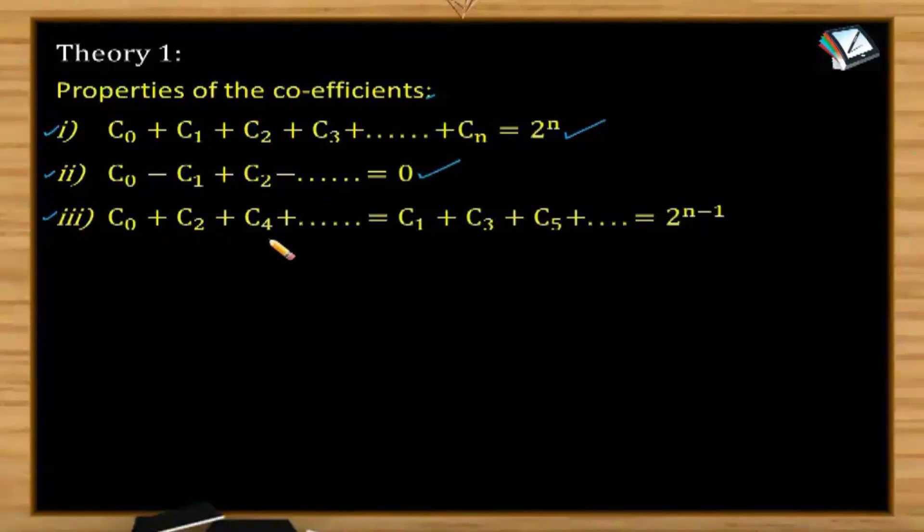And property number 3: C0 plus C2 plus C4 plus and so on equals C1 plus C3 plus C5 plus and so on equals 2 power n minus 1.